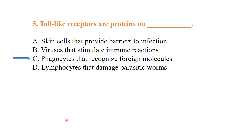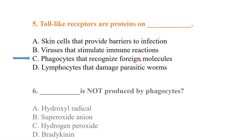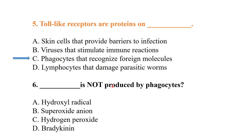Toll-like receptors are proteins on phagocytes. These are receptors present at specific sites that recognize foreign molecules not produced by phagocytes.